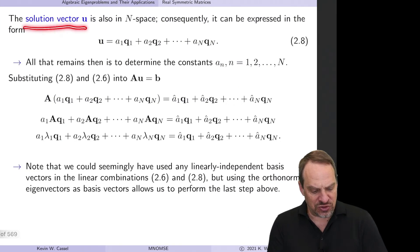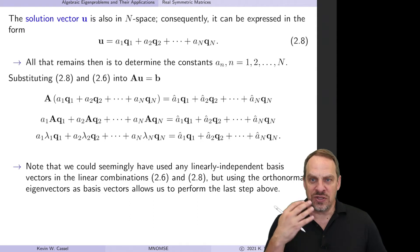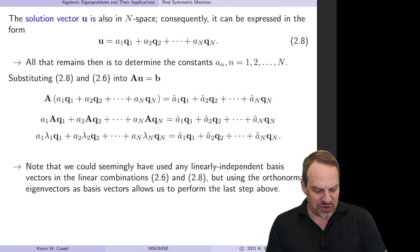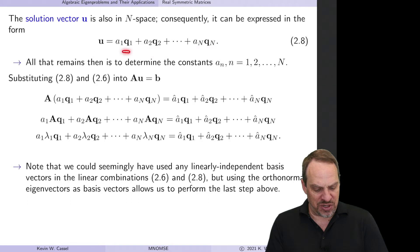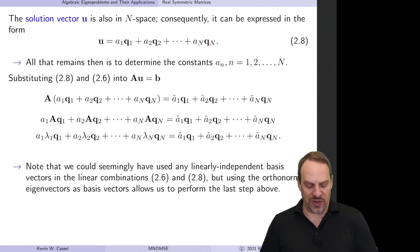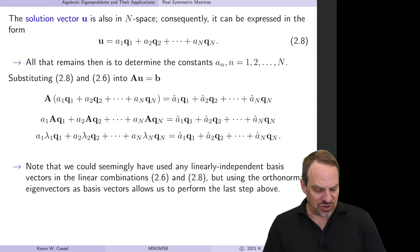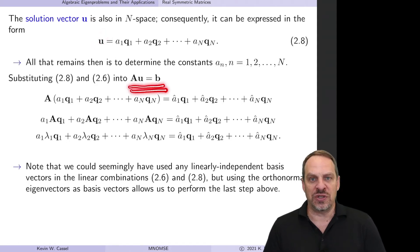Now let's do the same thing for the solution vector U. In this case I don't know U — that's what we're trying to find. But let's start by writing the same linear combination: U is a linear combination of Q1, Q2 through Qn, now with a different set of constants A1, A2 through An. To get these constants, we substitute U along with B into our system of equations AU equals B.